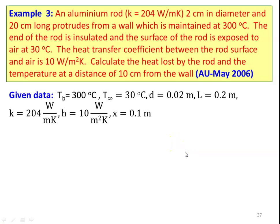After reading the problem, we write down the given data. The base temperature is 300 degree Celsius. The surrounding fluid temperature T infinity is 30 degree Celsius. Diameter of the pin fin is 0.02 meter. Length of the pin fin is 0.2 meter. Thermal conductivity of the material is 204 watts per meter Kelvin. Heat transfer coefficient is 10 watts per meter square Kelvin. And distance x equals 0.1 meter.